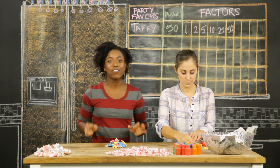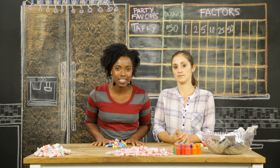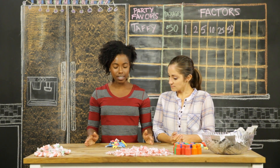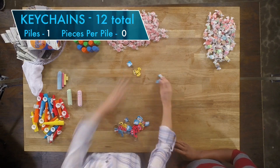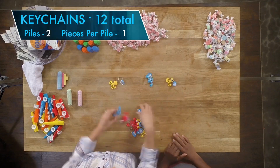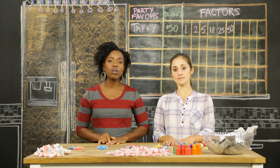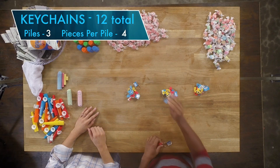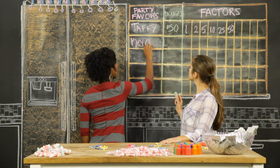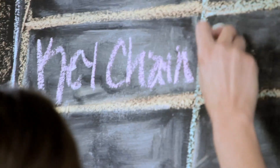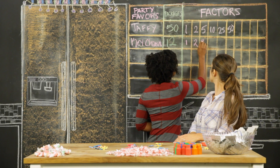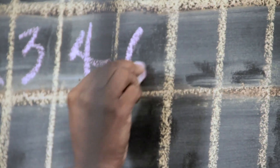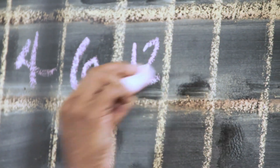Keychains — I love these. We have 12 keychains here, and we can split them into two piles of six. Six is a factor of 12, so I can make six piles of two each. We can also split this into four piles of three each, or three piles with four keychains each. The factors of 12 are: one, two, three, four, six, and 12.